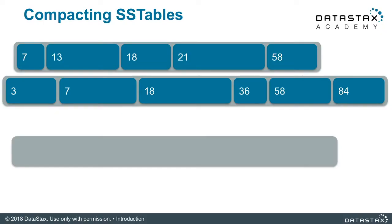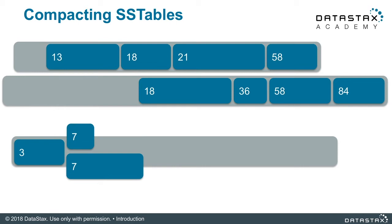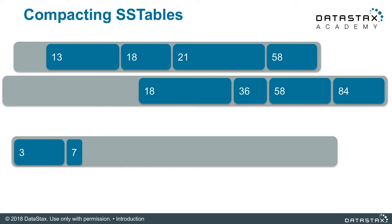Here's our new SSTable. Apache Cassandra stores the partitions inside of the SSTable file sorted by partition token value. We'll start with partition token value 3 — Cassandra copies the values into the new SSTable, and we're done. Let's take partition 7 from both SSTables — we need to combine all these values together. Watch what happens: we actually shrink. I bet you were expecting it to grow because both of those partitions were rather large. I want you to pause the video here and think about that, then come back and let's talk about it.